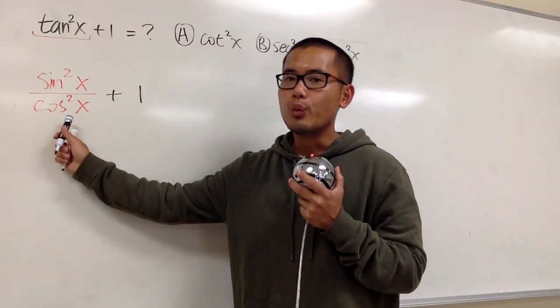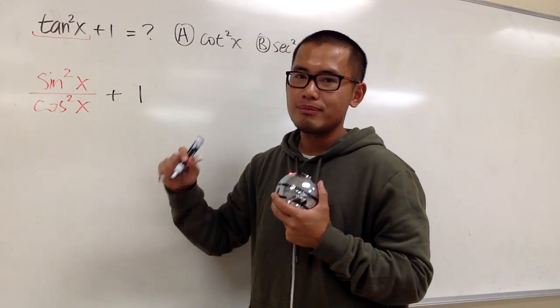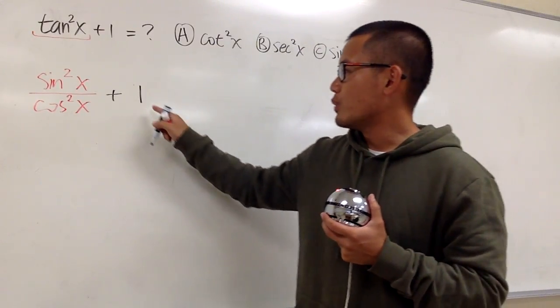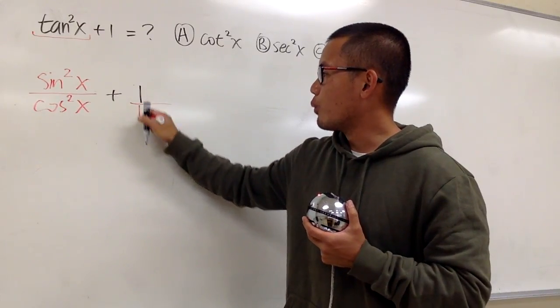And now, as you can see, we have a fraction plus 1. And what do we need to do to add fractions? Well, we need to have the same common denominator, right? And first, let me make the one as 1 over 1.